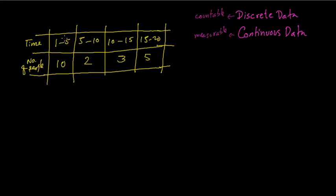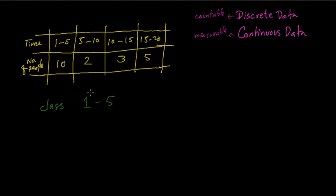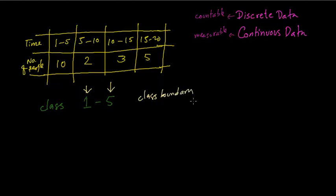Here we have data which is grouped together. This grouped data is called a class. The class begins at 1 and ends at 5. This border or boundary of the class is called the class limit or the class boundary. The class boundary is the beginning and the ending value of the class — this is also known as the class limit.